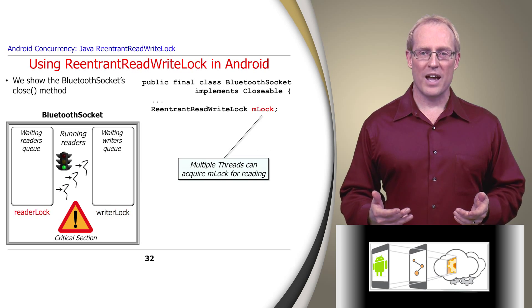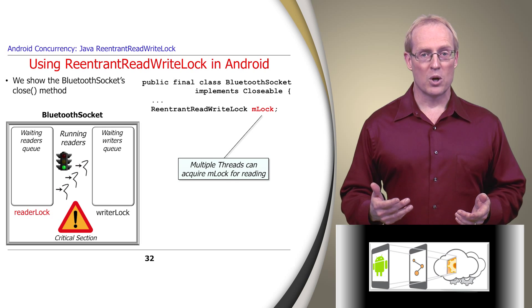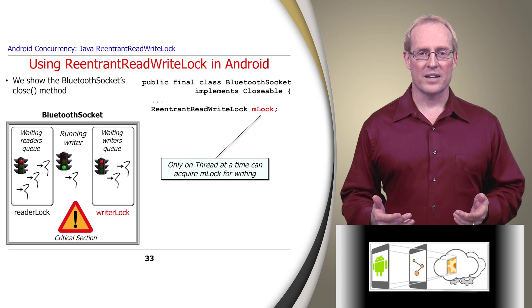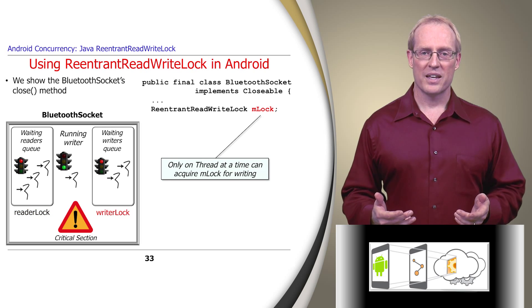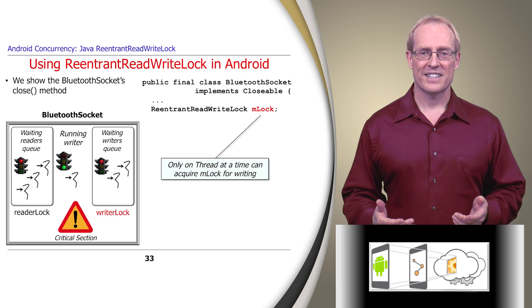Multiple threads can acquire mLock for reading at the same time, but only one thread at a time can acquire mLock for writing, thereby ensuring Reader-Writer lock semantics.